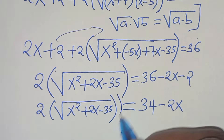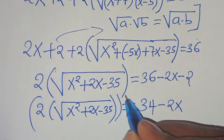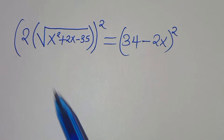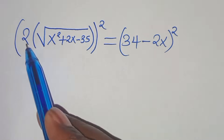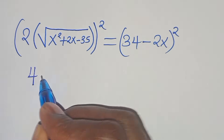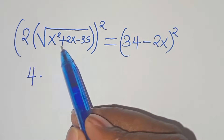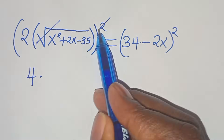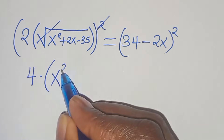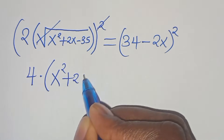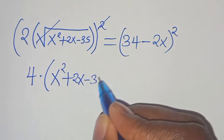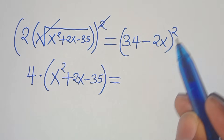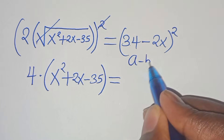The next step is to square on both sides again. Squaring both sides: 2 squared, which is 4, multiplied by the square root of (x squared plus 2x minus 35) squared — we can eliminate the square root — so we have 4 times (x squared plus 2x minus 35) equal to (34 minus 2x) squared.